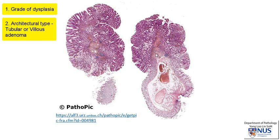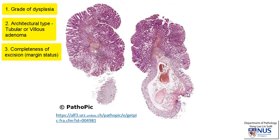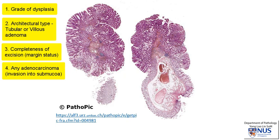The other things we evaluate are the grade of dysplasia — whether it is low-grade or high-grade — and we also try to evaluate whether the entire polyp has been excised, in other words whether there is dysplasia at the excision margins. It is also very important, especially in polyps with high-grade dysplasia, to evaluate whether there is invasive adenocarcinoma — that is, a carcinoma that has invaded through the muscularis mucosa into the submucosa.